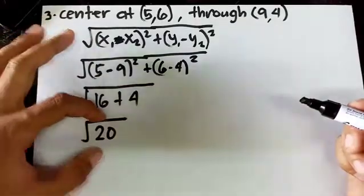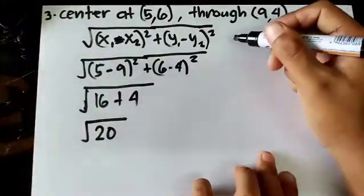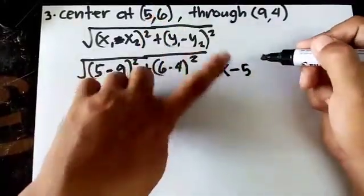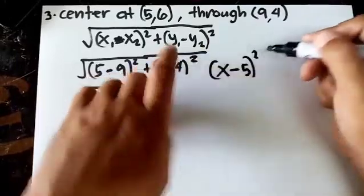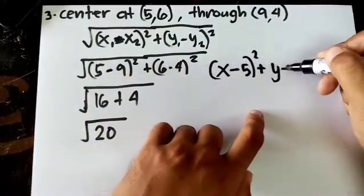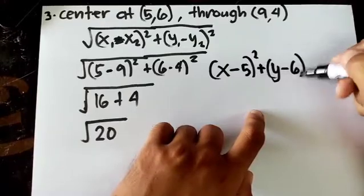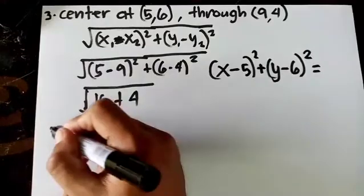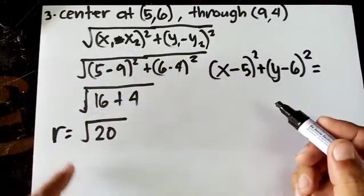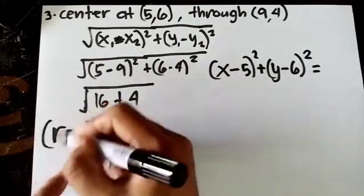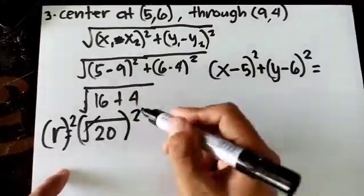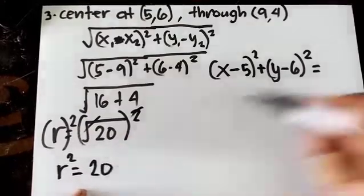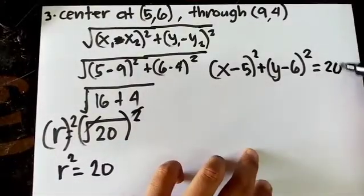Now that we have the radius √20, substitute into the standard equation. To get r², square both sides: r² = 20. So the answer is (x-5)² + (y-6)² = 20.